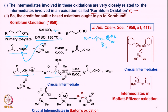In all these cases, once the leaving group leaves the carbon, the DMSO oxygen attacks — this is the carbon where DMSO attacked. This intermediate is very similar to the crucial intermediate we have talked about in Moffatt-Pfitzner oxidation. The base can pick up the proton, and oxidation completes by the loss of dimethyl sulfide, as discussed in other cases.